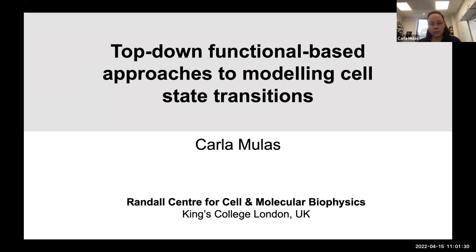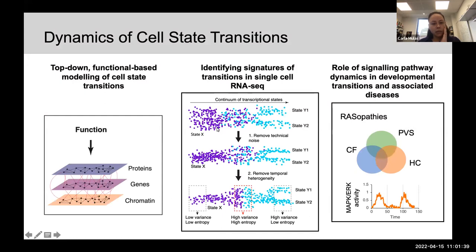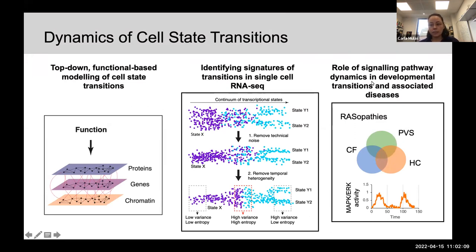I'm really working on the biology and biochemistry in order to develop, start informing, and parametrizing the mathematical models. My work mostly focuses on looking at the dynamics of cell state transitions — how to use functional-based and top-down approaches, identifying signatures in single-cell RNA sequencing by removing technical and temporal heterogeneities, and modeling developmental disorders and the role of signaling pathway dynamics.